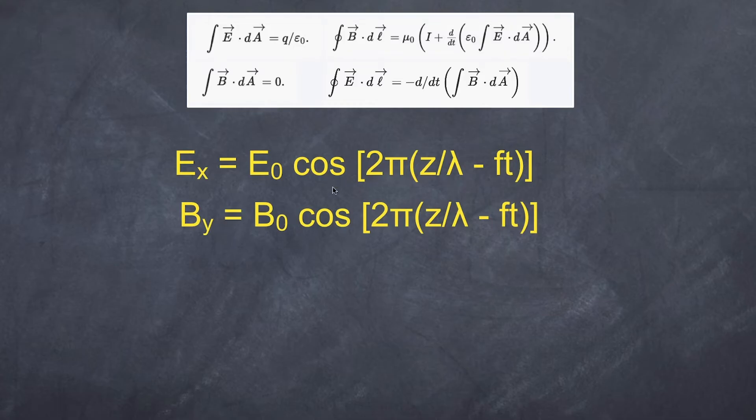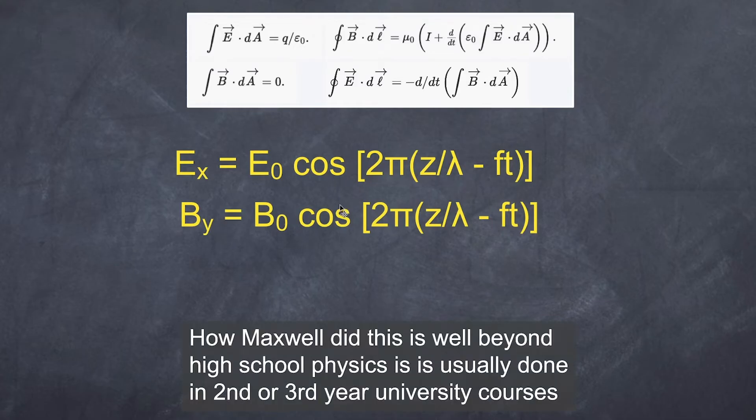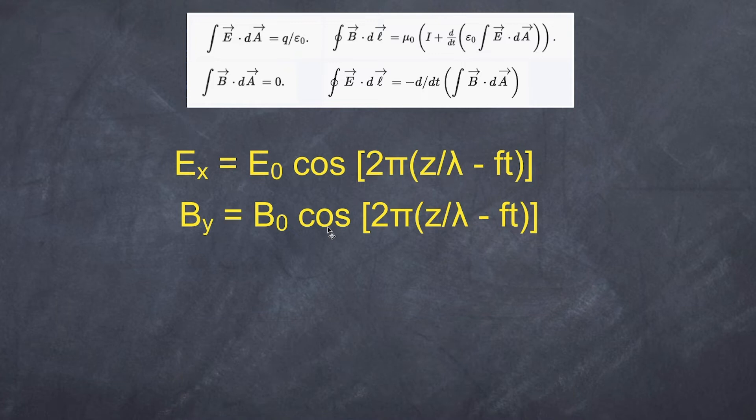And you can see that by this cos term. Now again I'm going to sound like a broken record here. Do not worry about the mathematics. What's important here is that Maxwell took his equations and was able to describe the relationship between the electric field and the magnetic field in what we refer to as a wave form. In other words it is generating a wave that has a specific wavelength and a specific speed. And he noted that when the electric field is at a maximum the magnetic field is at a maximum. So in other words the two waves that are generated, the electric field and the magnetic field, are in phase with each other.